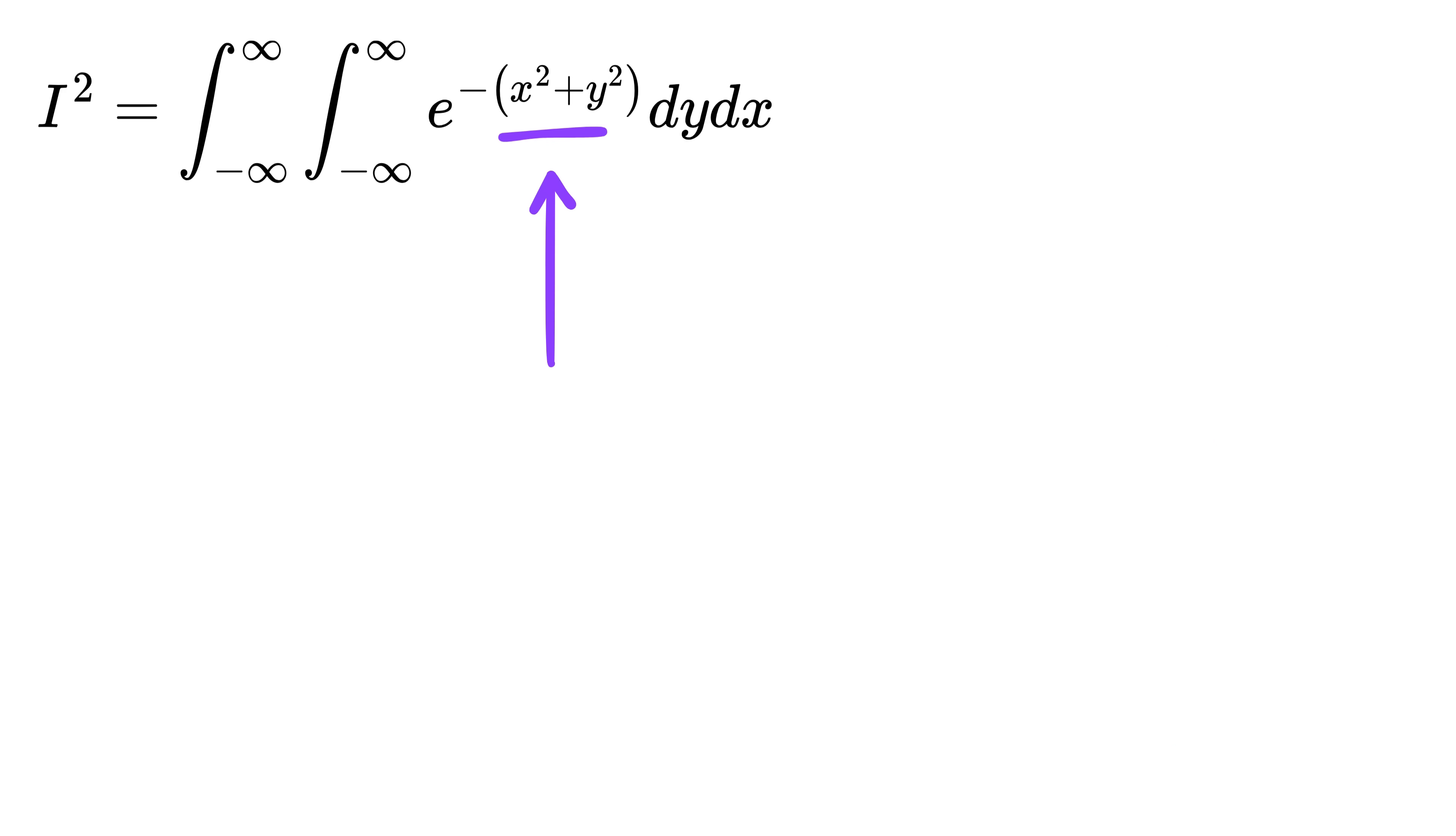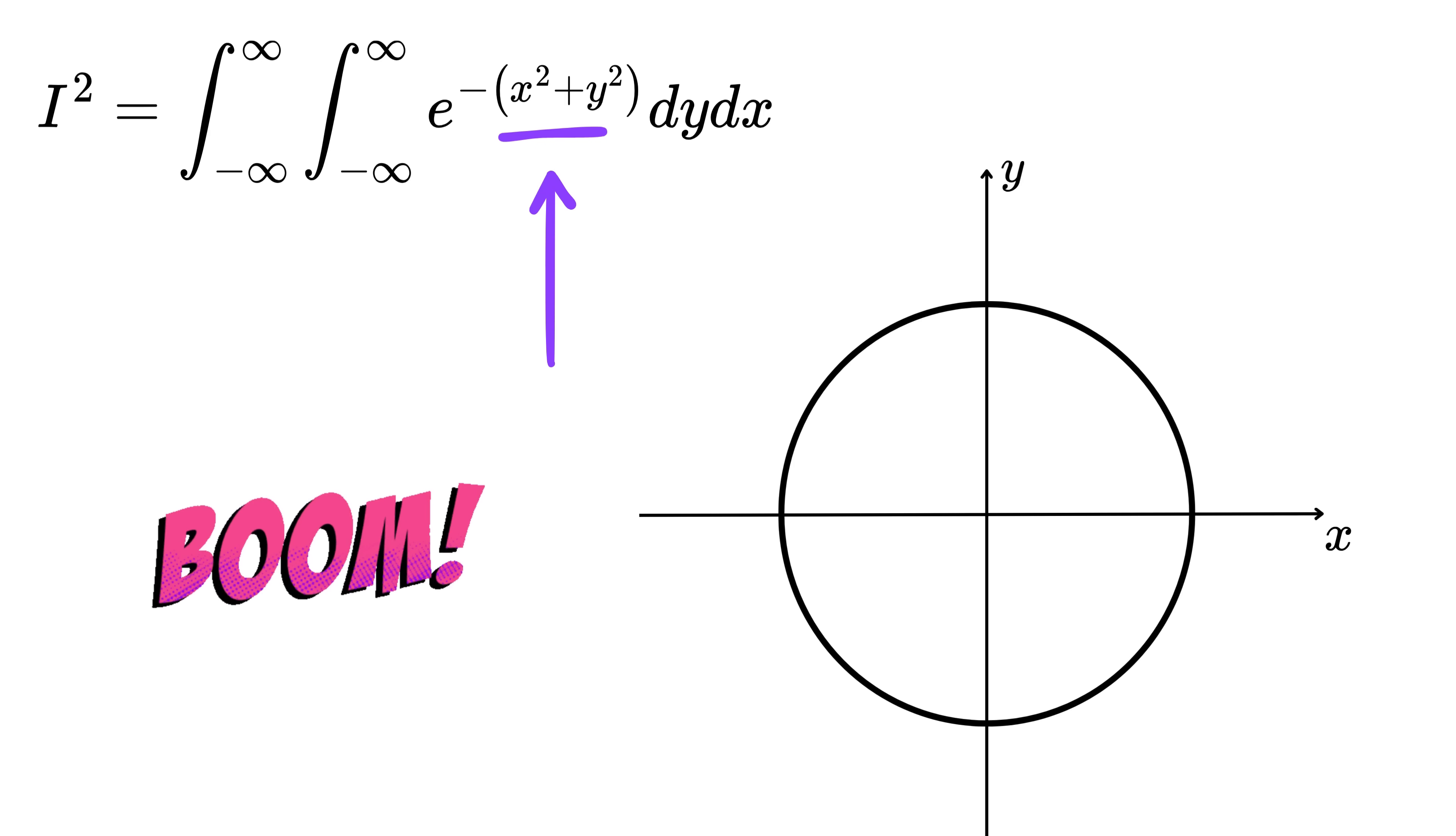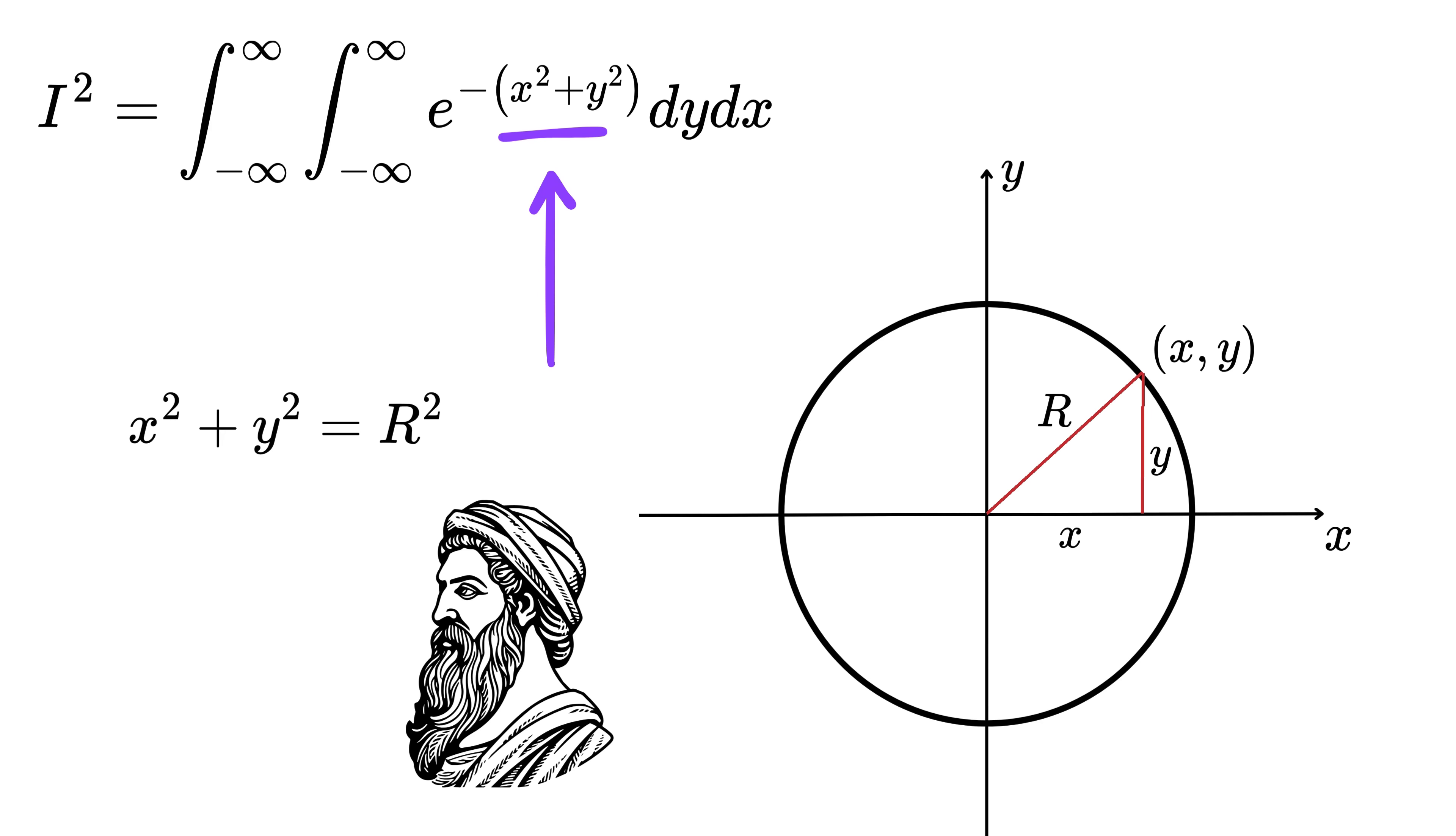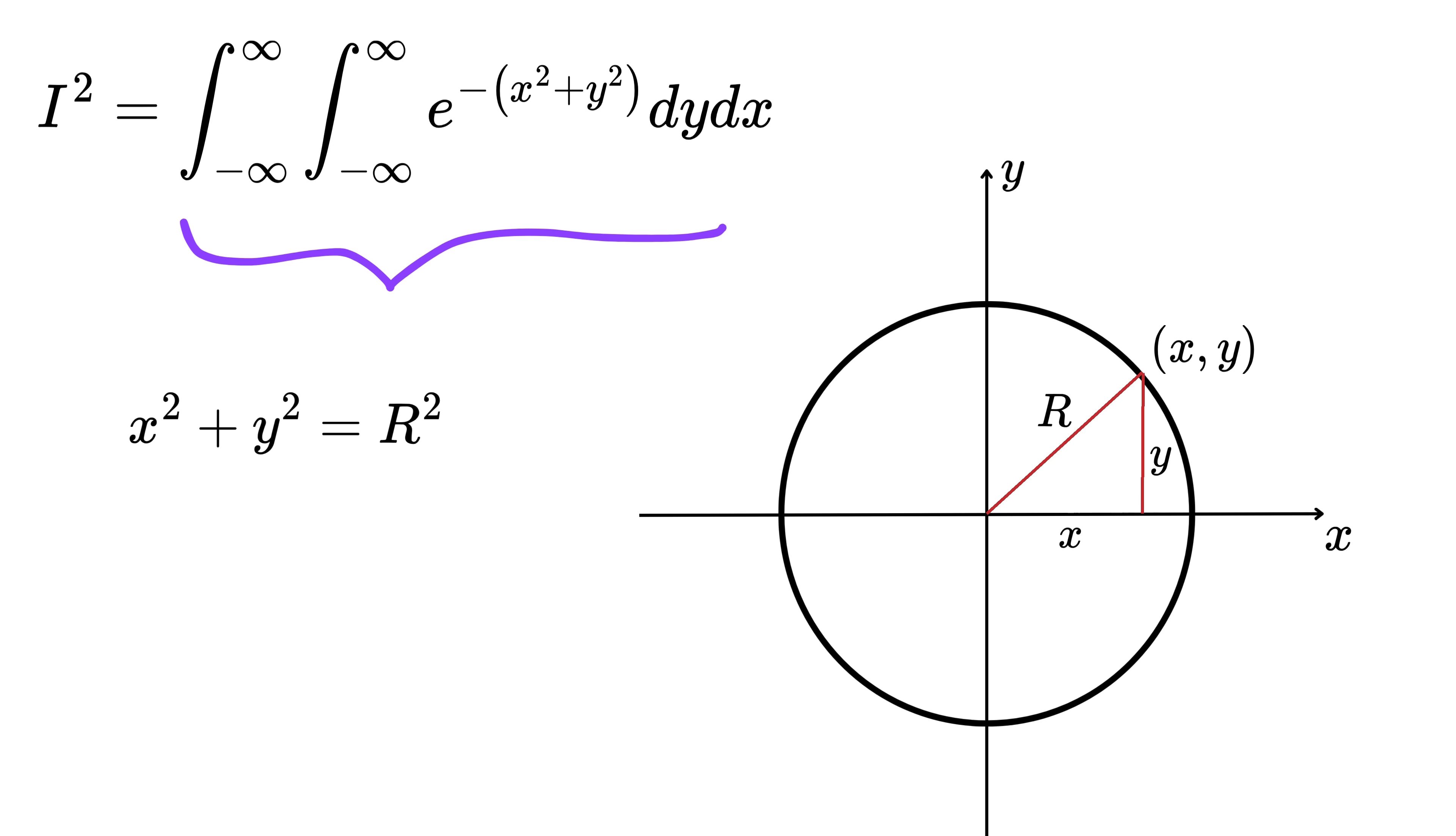That expression x squared plus y squared should ring a bell. Doesn't it remind you of something? Think distance from the origin in a circle, and boom! If we have a circle of radius r centered at origin, then any point on that circle satisfies the equation x squared plus y squared equals r squared. All credits to our good old friend Pythagoras for this. So now can you see how this integral is somewhat related to pi? Because we will now bring circles into the picture.